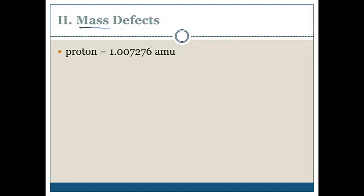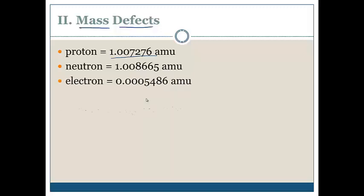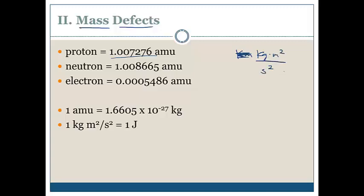Now we have something known as the mass defect. Masses of protons, you saw this before. One proton, 1.007276 AMUs. Neutrons, slightly heavier. Electrons, way smaller. Now 1 AMU is 1.6605 times 10 to the negative 27 kilograms. And remember, if you have units of kilograms times meters squared over seconds squared, that is basically the same as one joule. Joules are just units of energy.